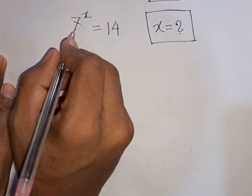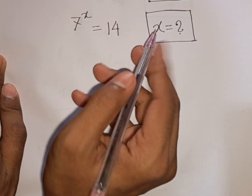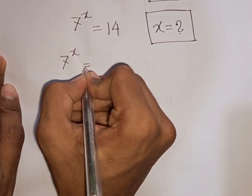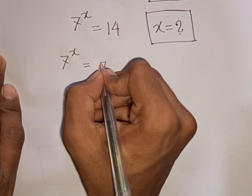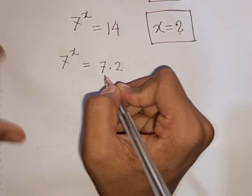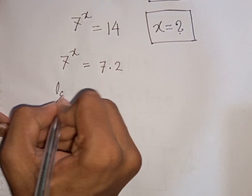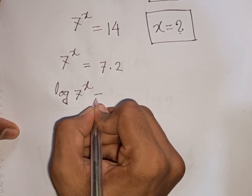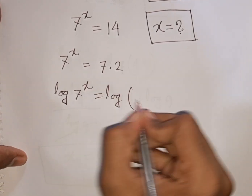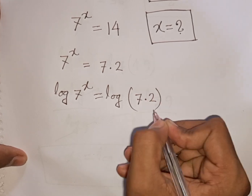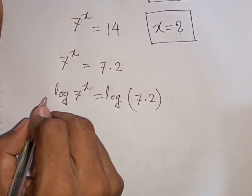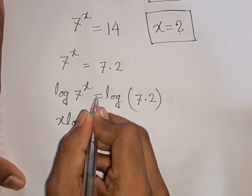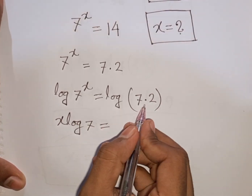Now, how to solve 7 power x equals 14. Find the value of x. We rewrite 14 as 7 times 2, so 7 power x equals 7 times 2. We apply log to both sides: log of 7 power x equals log of 7 times 2. The power x moves down, giving x times log 7 equals log(7 times 2).